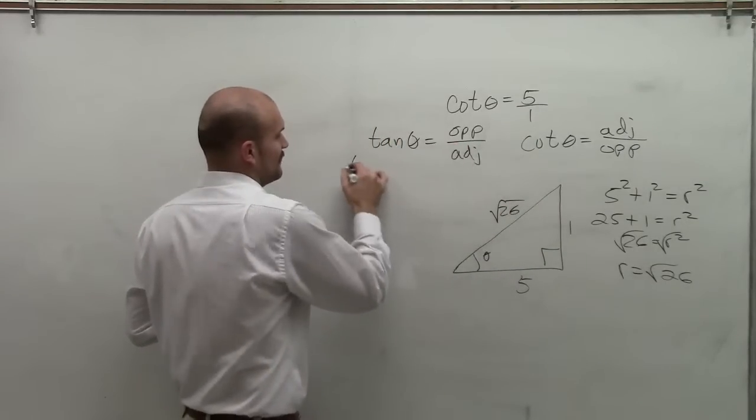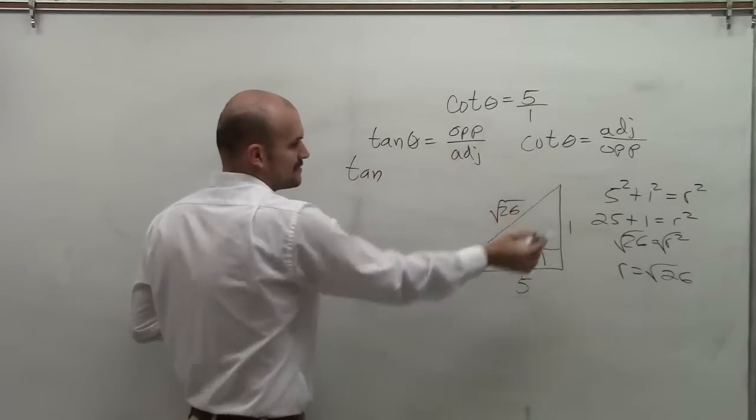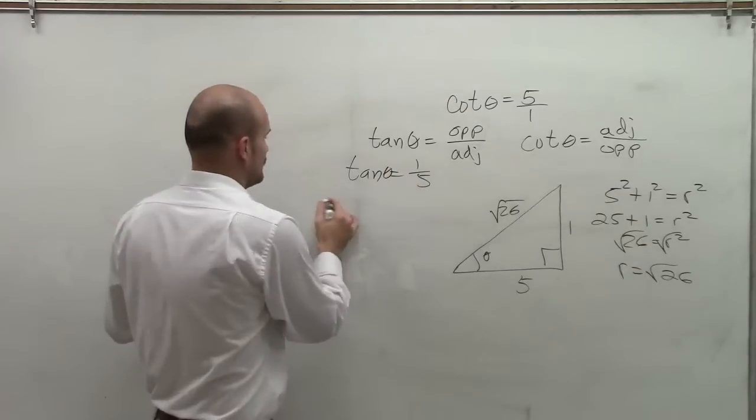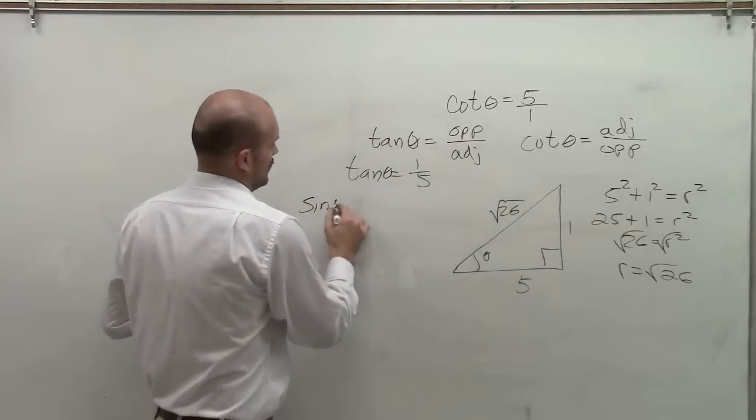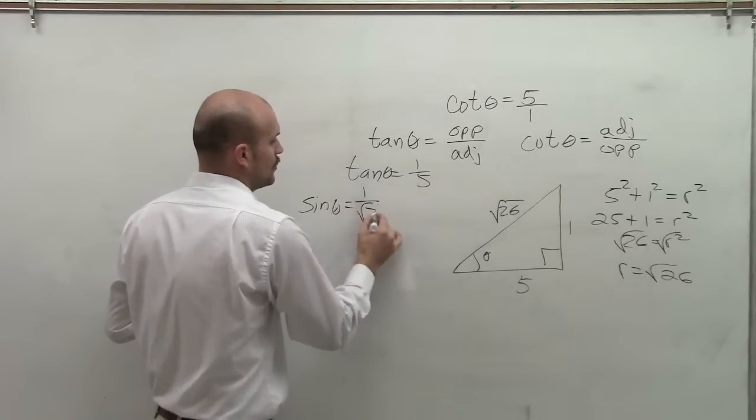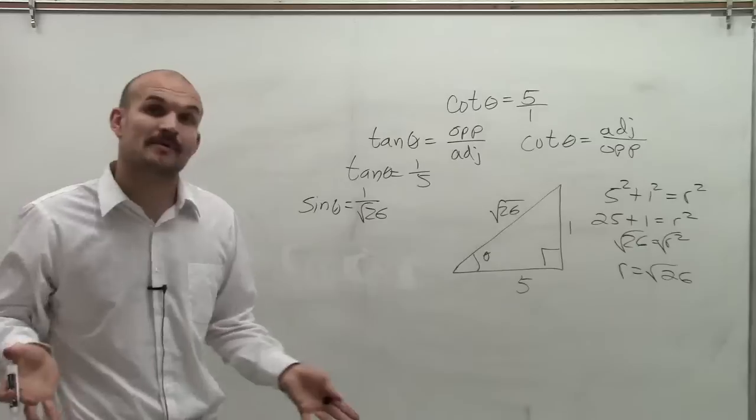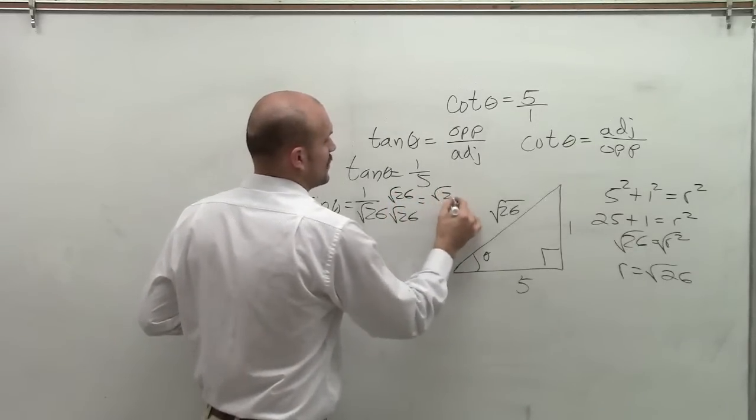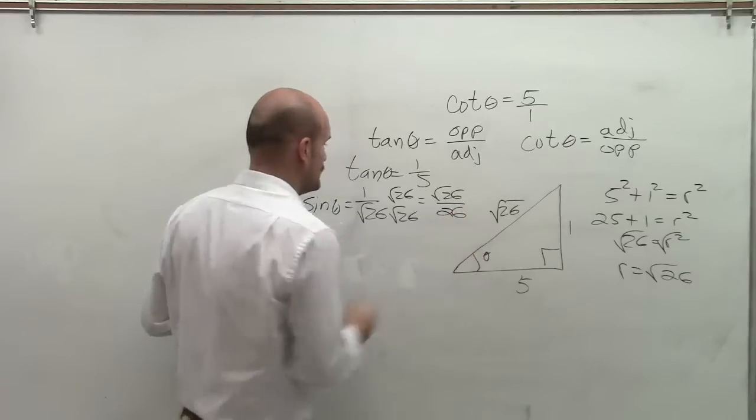So now that I have my radius of square root of 26, well tangent is going to be fairly easy to represent. Tangent is opposite over adjacent, so that'd be, or tangent of theta is 1 fifth. The sine of theta is going to be opposite over hypotenuse, so 1 over square root of 26. Remember to rationalize the denominator. So therefore, we have square root of 26 over 26.